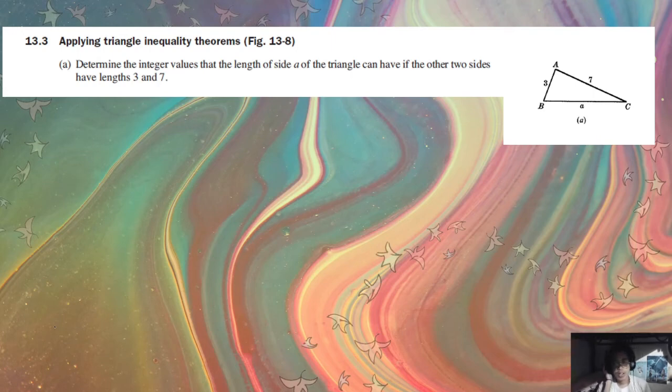Okay, so continuing with our tenth lesson on triangle inequalities, let's try to solve this problem. Determine the integer values that the length of side A of the triangle can have if the other two sides have lengths 3 and 7.